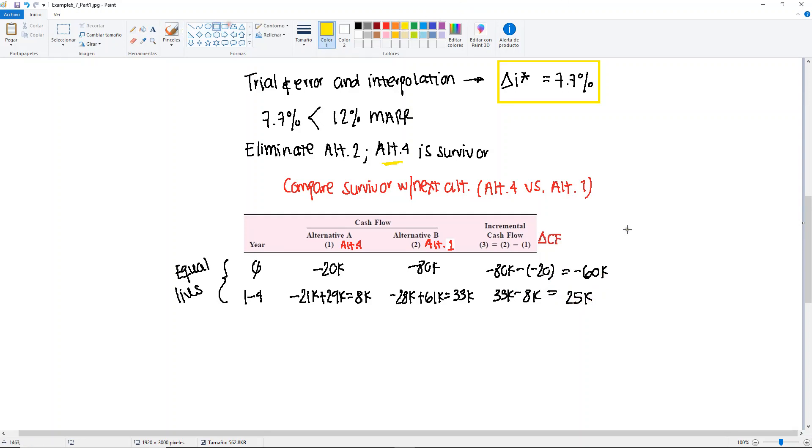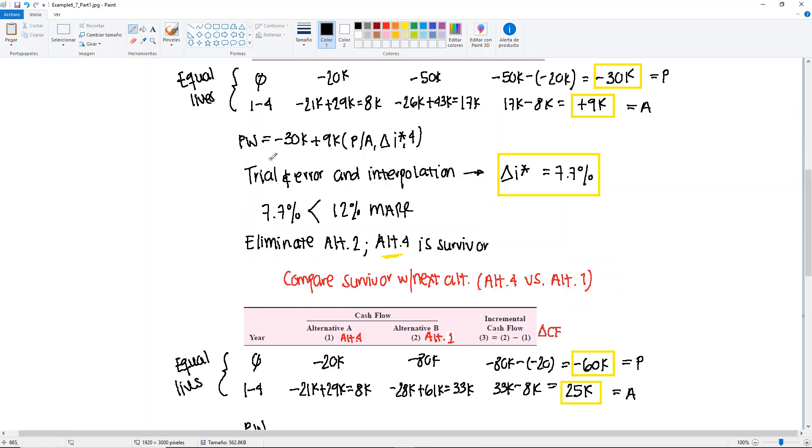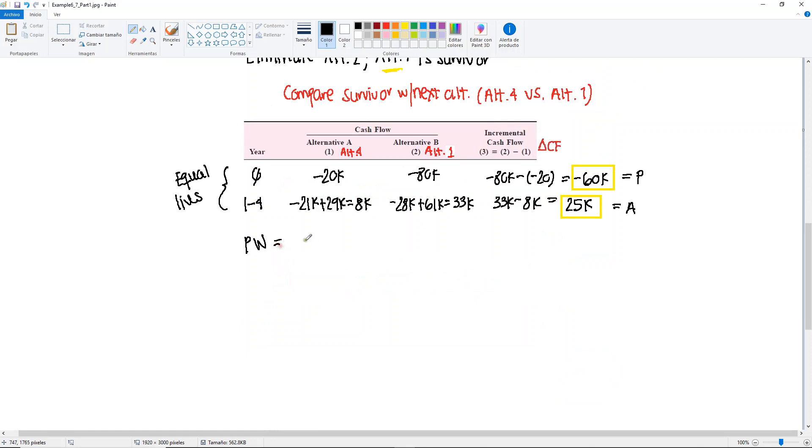These are the values that we need for our present worth relation. If it's in year 0, that means this would be our P, and if it's every year, this would be our A. We set up the present worth equation just like this one right here. Present worth would be equal to minus $60,000 already in P, plus $25,000 find P given A at delta i star for four years.